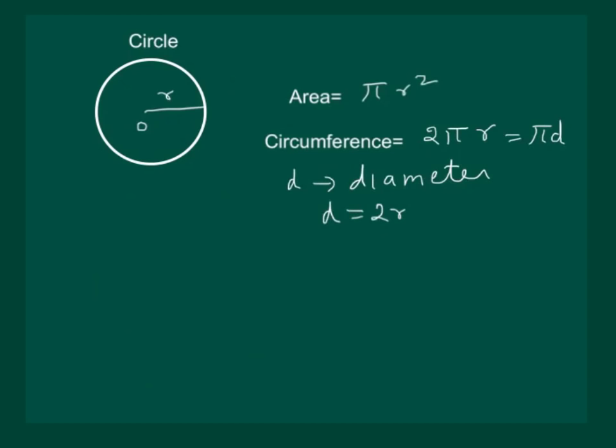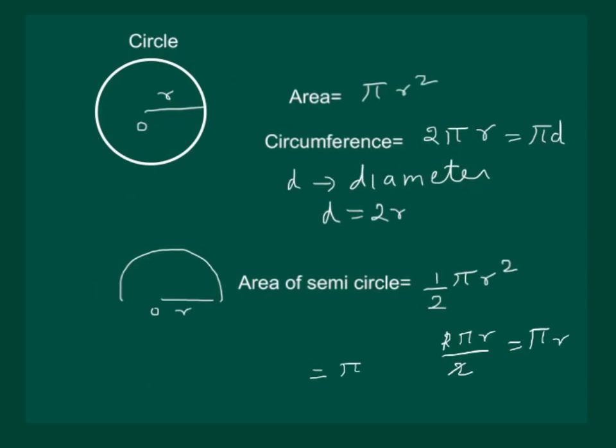Now, suppose we have a semicircle whose radius is R. Then, its area will be half the area of the circle, that is half pi R square. And circumference of semicircle is also half that of the circle, that is 2 pi R by 2 which is equal to pi R or pi D by 2.